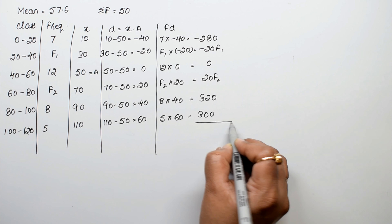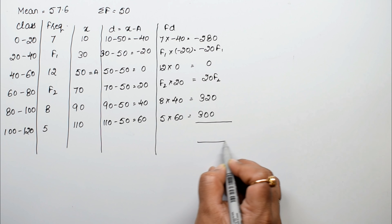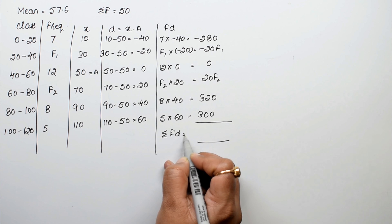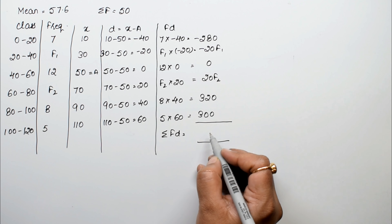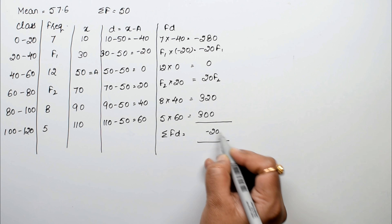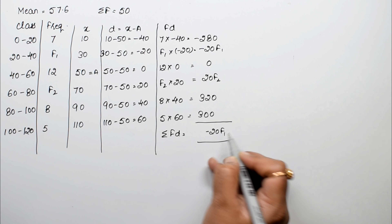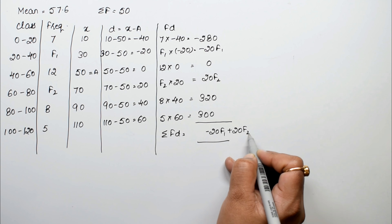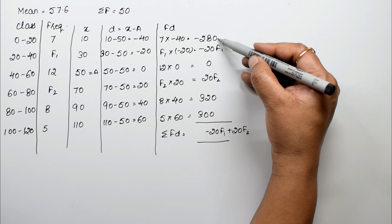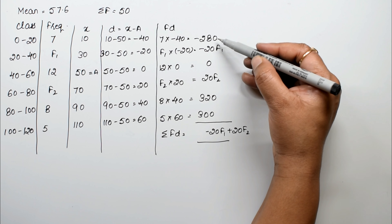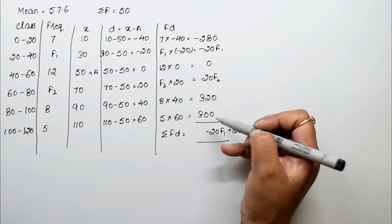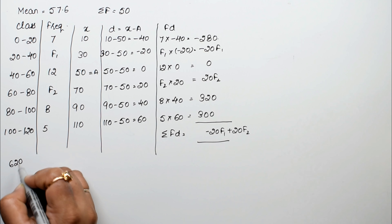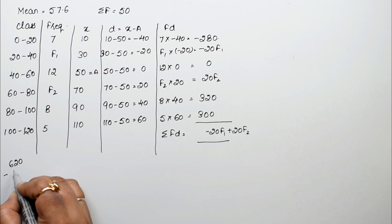Now summation fd includes plus 20f2 and minus 20f1. Combining the constant terms: minus 280 plus 320 plus 300 gives us the positive sum, and we also have minus 20f1 plus 20f2.